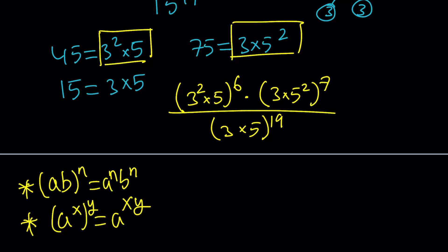Let's go ahead and see how they apply. For example, 3 to the second to the sixth is going to be 3 to the power of 12, and we're supposed to multiply it by 5 to the power of 6. And then that is going to be multiplied by 3 to the seventh and then 5 to the 14th because 2 times 7. And at the bottom we have 3 to the 19 times 5 to the power of 19.